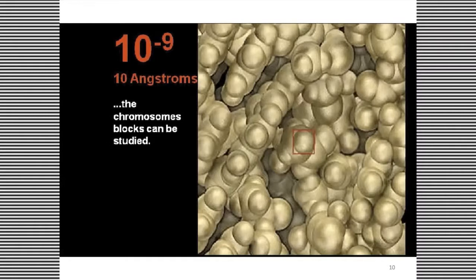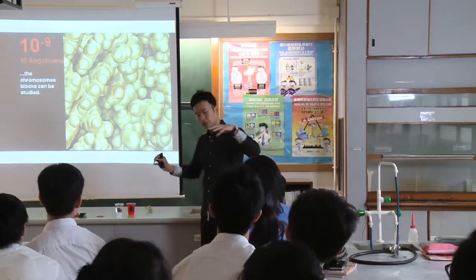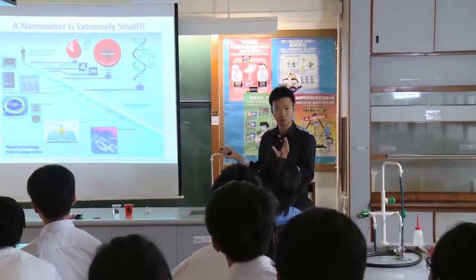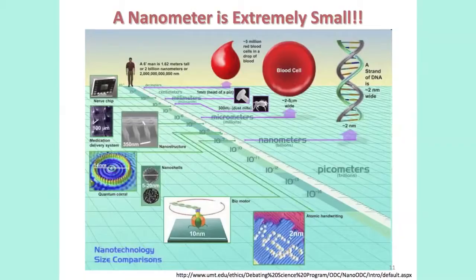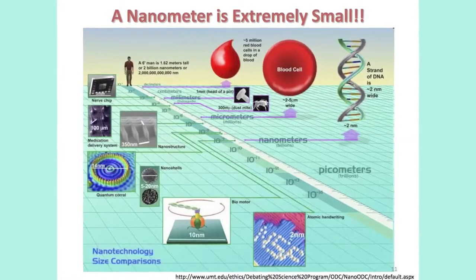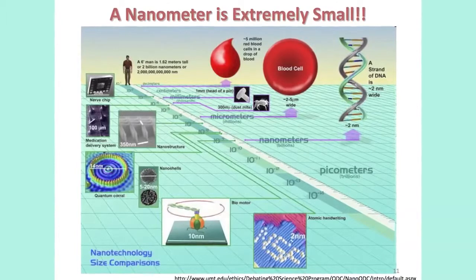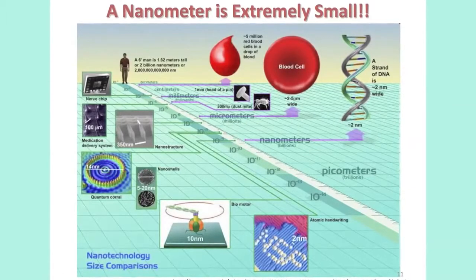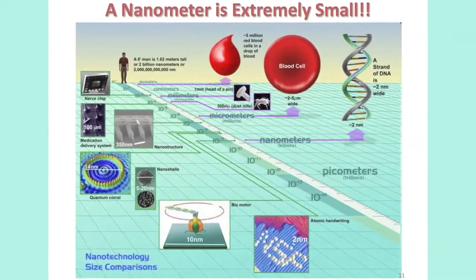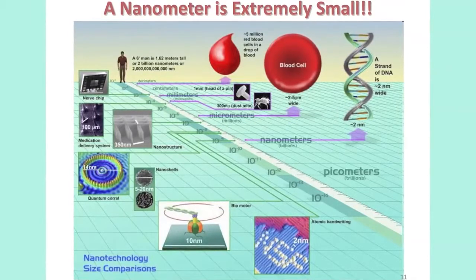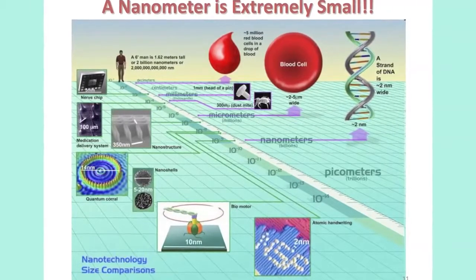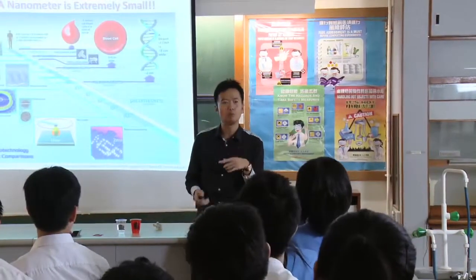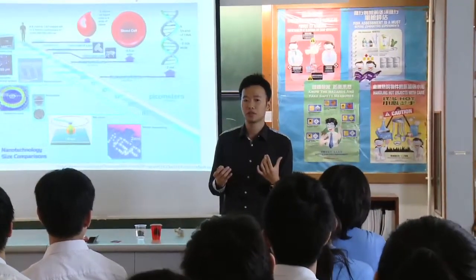So we zoomed in all the way from a leaf down to the nanometer scale. To recap — a nanometer is really, really small. The width of a DNA strand is about two to three nanometers. A red blood cell, by comparison, is relatively huge at about two to five microns — 10 to the minus 6 meters. One nanometer is one billionth of a meter.